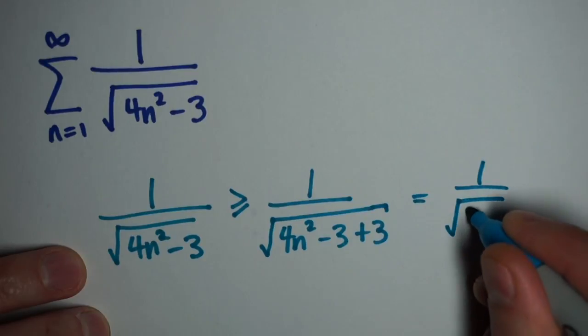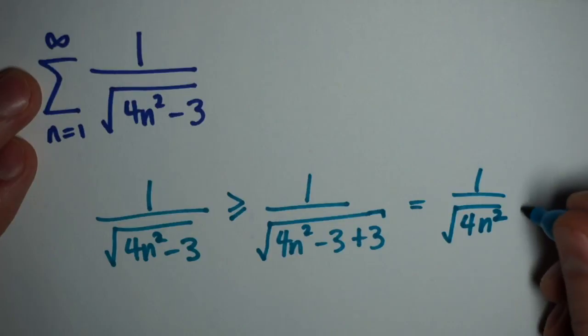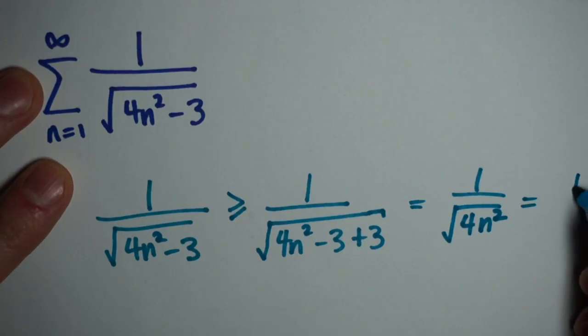So I have 1 over the square root of 4n squared. Once I cancel out these 3s, and simplifying this, this is going to be 1 over 2n.